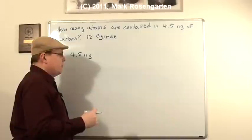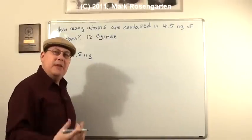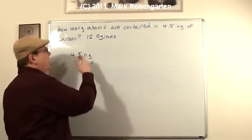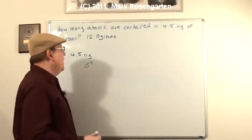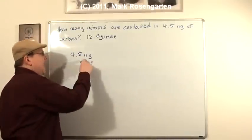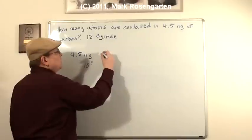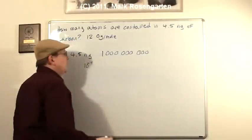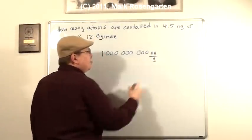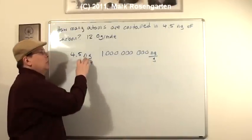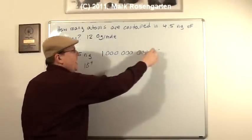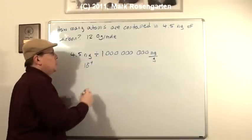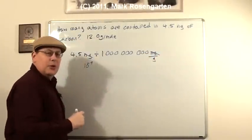4.5 nanograms. Now, a nanogram is a billionth of a gram, or 10 to the minus 9th grams. And a gram is 10 to the 0th. It's the unit measurement. So there's 9 powers of 10 difference between nanograms and grams. That's 1 followed by 9 zeros. And that's in nanograms per gram. Now, because we've got nanograms that we're trying to solve for, and nanograms is in the numerator of our conversion factor, we have to divide in order to cancel nanograms out and be left with grams.